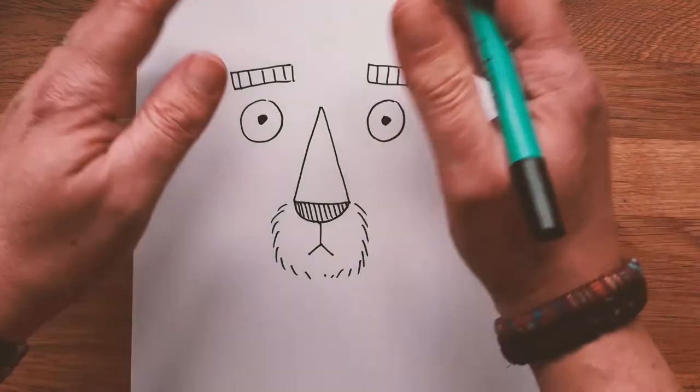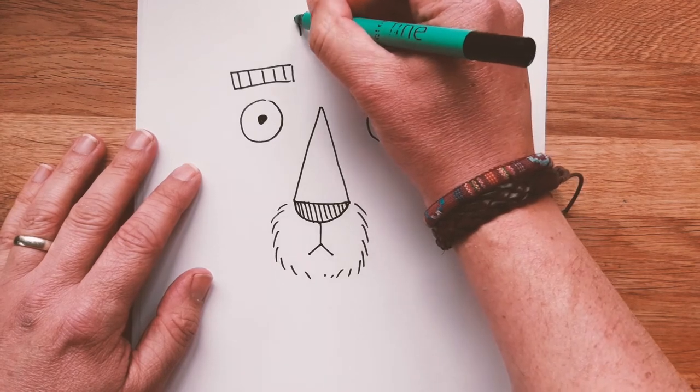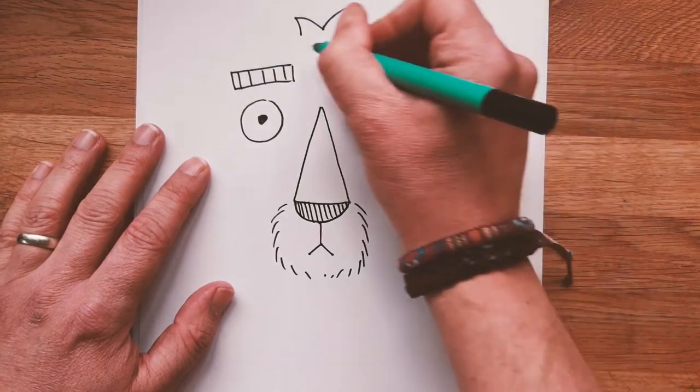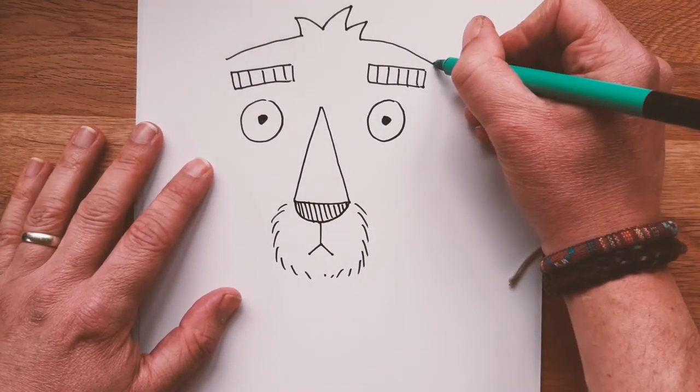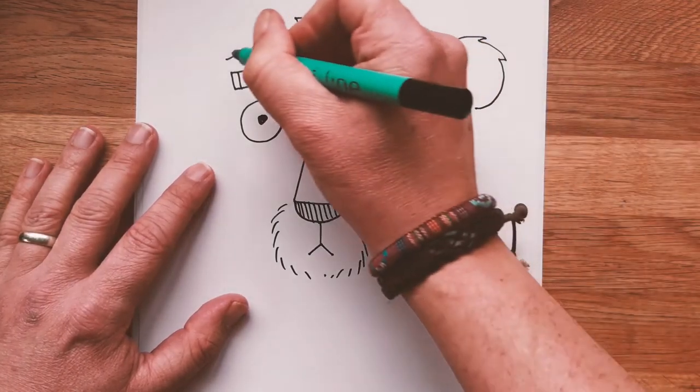Now we need the rest of his head. So we'll start with a little tuft of hair on top. There we go. Then we'll start to draw the top of his head. But before we go too far we've got to remember his ears. So his ears are round with little bits of tufty hair like that. One on each side.